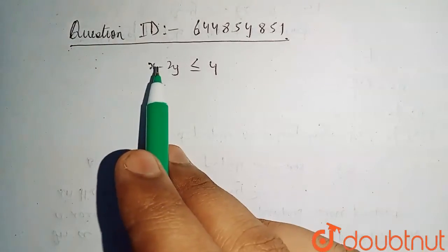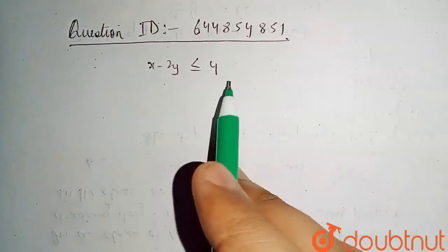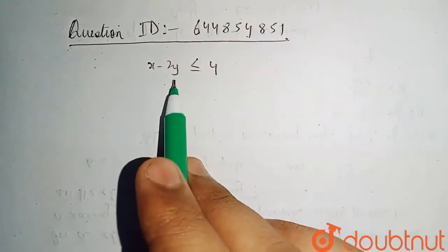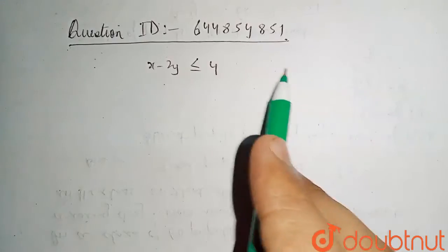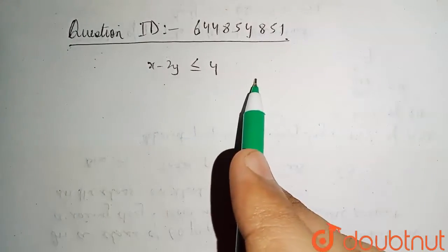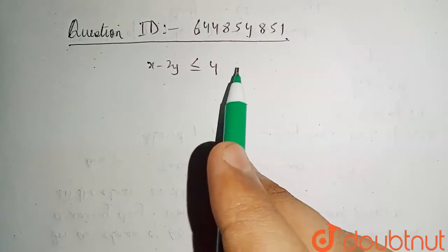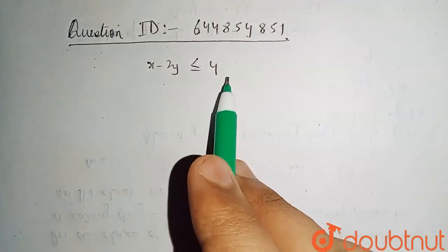Hello students, today's topic is from linear inequalities and the inequality given as x-2y is less than equals to 4. We have to solve this graphically and represent them on the Cartesian plane and find the values of x and y which is possible for this inequality.